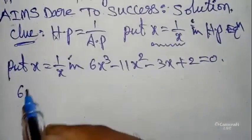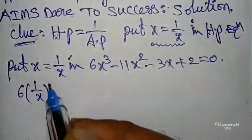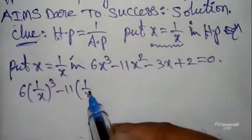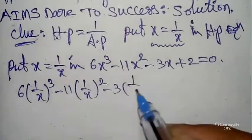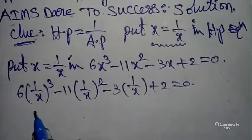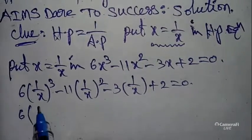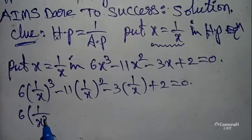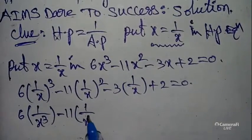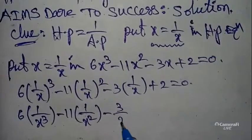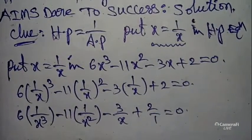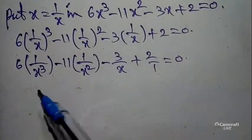We get: 6 times (1/x)³ minus 11 times (1/x)² minus 3 times (1/x) plus 2 equals 0. So that is 6/x³ minus 11/x² minus 3/x plus 2 equals 0. Multiplying through, we get 0 over x³ structure with numerator terms.